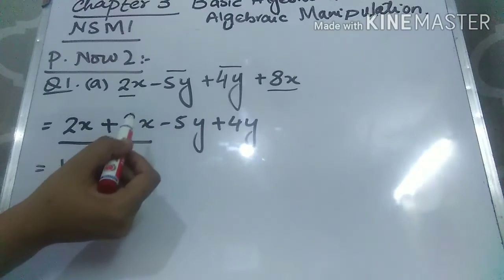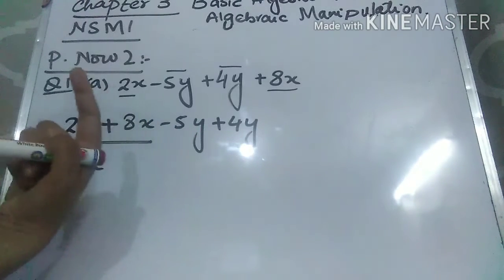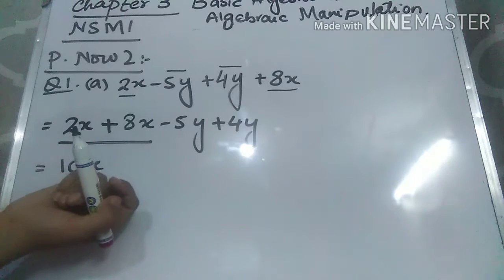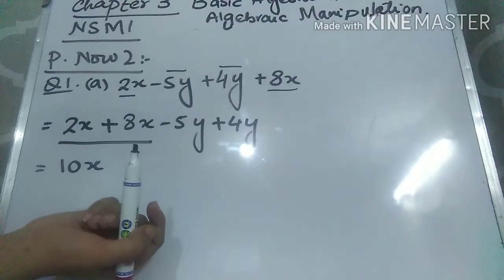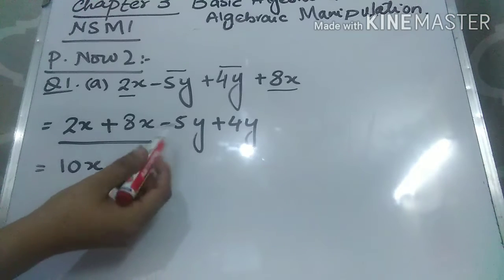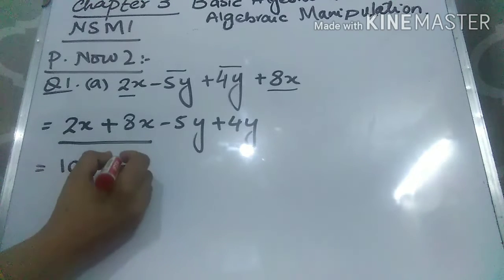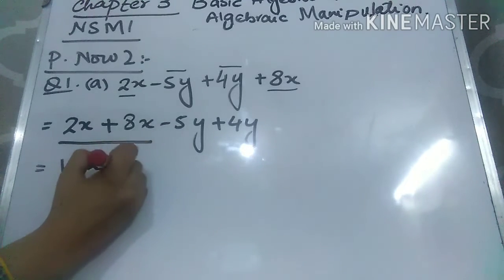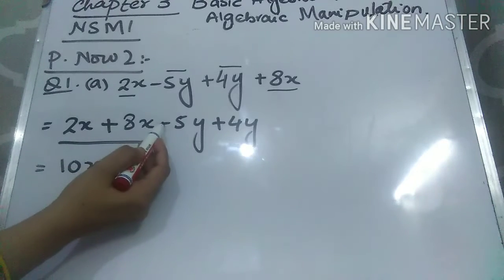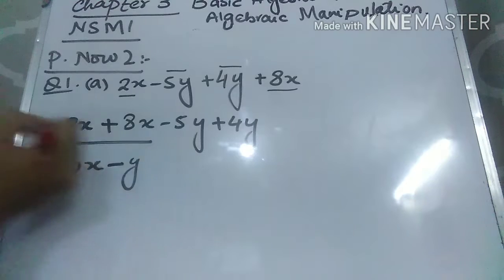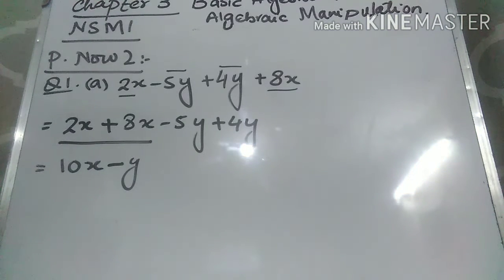For the Y terms, minus 5y plus 4y: subtract 4 from 5 to get 1. There is no need to write 1 as a coefficient with the variable — a single variable means it has coefficient 1. So 5 minus 4 is 1, written simply as Y. You write the sign of the bigger number: the bigger number is 5, so put a minus sign. The answer is 10x minus y.